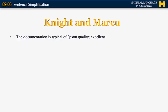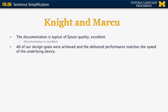Here are some examples from that corpus. You have a full sentence like 'The documentation is typical of excellent quality' and then a shorter version as part of the training data: 'Documentation is excellent.' As you can see, we have removed some individual words — for example, articles, some adjectives, and some prepositional phrases. Another example: the full sentence is 'All of our design goals were achieved, and the delivered performance matches the speed of the underlying device.' The short sentence is 'All design goals were achieved,' so we are missing the possessive, portions of the conjunctive clause, and some prepositional phrases.